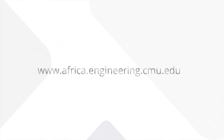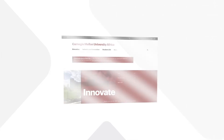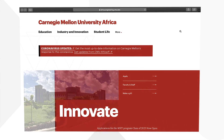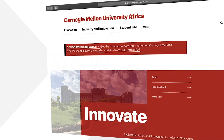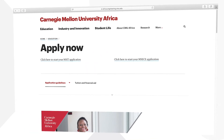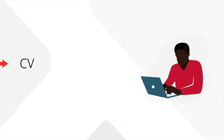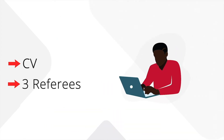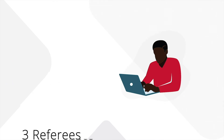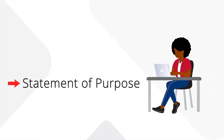Now that you are sure you have these two requirements, let's look at the online application process. Once you have filled in your basic information, you will be asked to do the following. First, upload your CV and provide contact information for three referees that will support your application. Second, upload a statement of purpose.